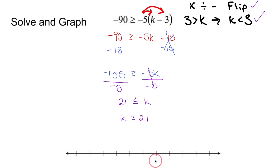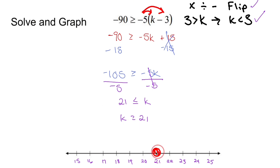Now to graph, put 21 somewhere on the number line and fill in the rest. K is greater than or equal to 21 — put a circle at 21 and fill it in, because k is allowed to be equal to 21. K is also allowed to be greater than 21 — numbers like 22, 25, and all of these. Fill in the entire right side. What this red shading means is any number covered by the shading — 21 and a half, 25, a billion — if I replace k with that number and do the math on the right side, it will be greater than or equal to negative 90.